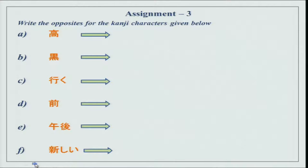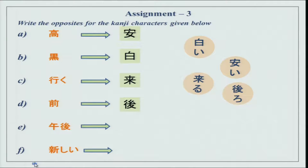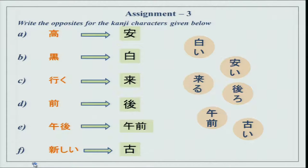There is some more kanji practice — write the opposites for the kanji characters given below. Takai — yasui. Kuroi — shiroi. Iku — kuru or kimasu. Mae which is front — ushiro. Gogo, afternoon — gozen, morning. And atarashii — furui. Write the hiragana once again for all the characters given here; it will help you practice. These are two country characters put there for you to find out which one is actually the correct one.